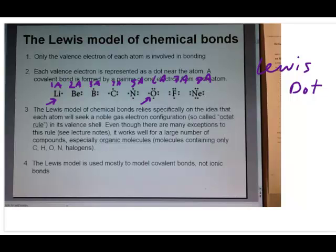The Lewis model, the way it's going to illustrate bonding, is by drawing these symbols and then making sure that every atom has an octet configuration, or 8 electrons around its valence shell.